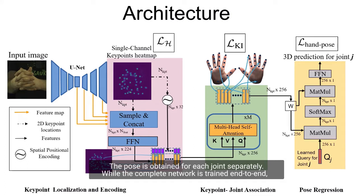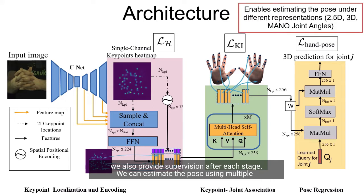While the complete network is trained end-to-end, we also provide supervision after each stage. We can estimate the pose using multiple representations as we use the image features from the joint location to estimate the pose.